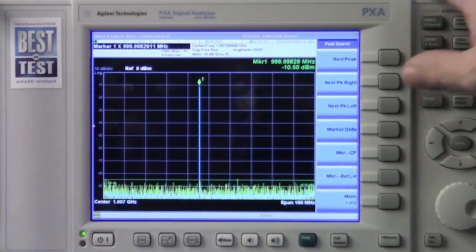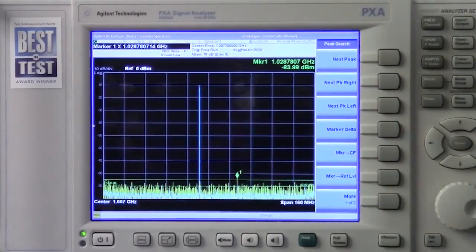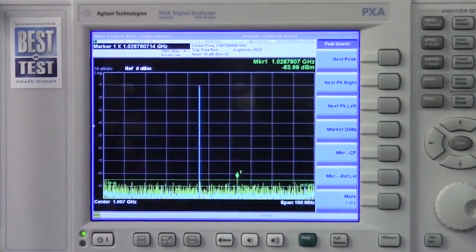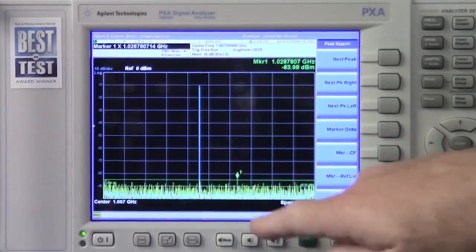Now when I do a peak search and a next peak, you'll go right to the signal that you want to look at and not have to work your way through all these intermediate signals.